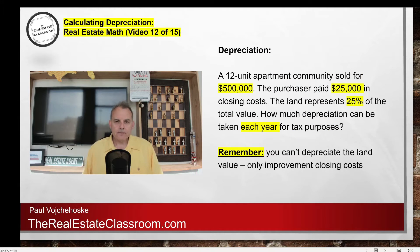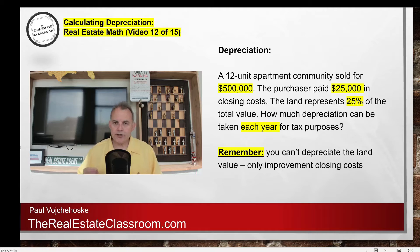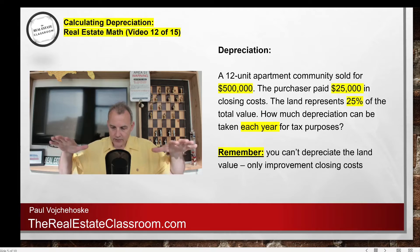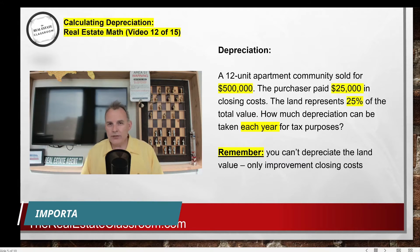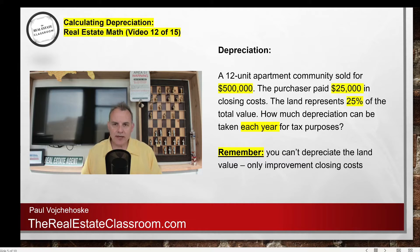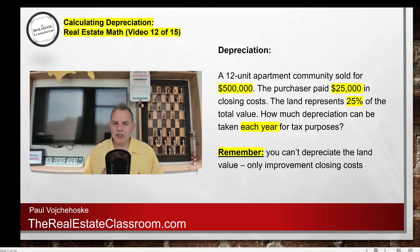The $500,000 represents the total valuation we'll use for our calculation. The purchaser paid $25,000 in closing costs, or acquisition costs, which we're going to add into that half million dollars. It's important to remember that the land itself — the raw land that the improvements sit on — we do not depreciate. We're only depreciating what we call the building or improvement value. The land represents 25% of the total value, so we have to figure that out.